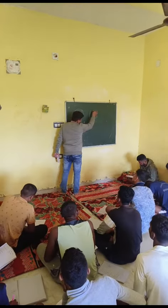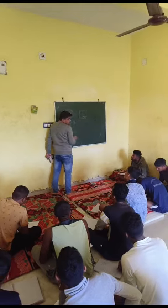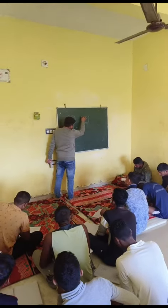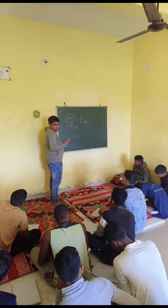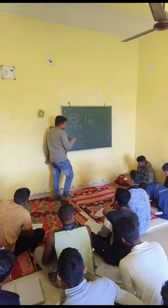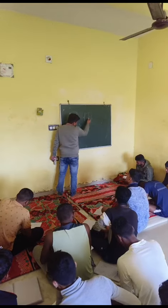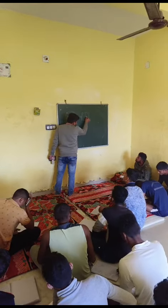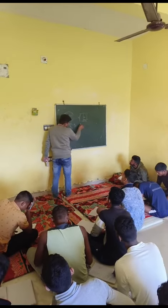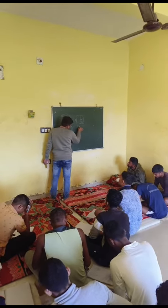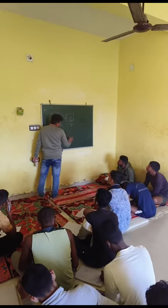The diameter of the circle is equal to the side of the square. If the side is A, then the diameter will be A, and the radius is A by 2.